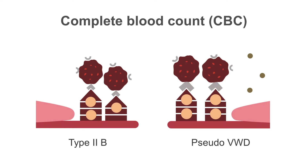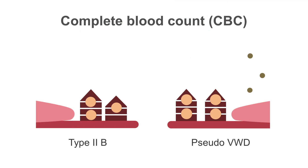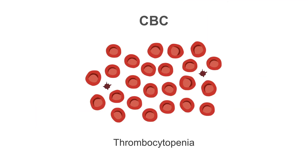Patients with von Willebrand's disease may demonstrate thrombocytopenia in cases of type 2B or pseudo von Willebrand's disease. In both of these types there is increased binding of von Willebrand's factor with the platelets, resulting in increased consumption of the platelets and resultant thrombocytopenia.